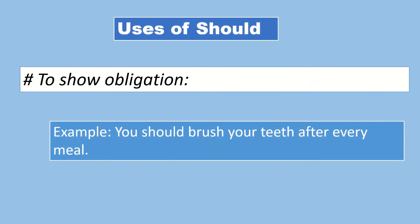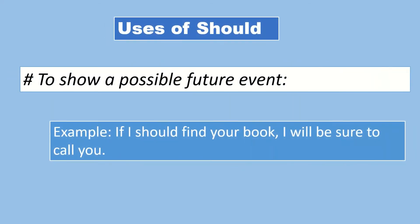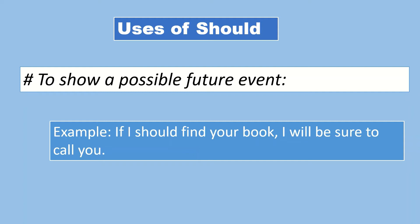'Should' is also used to show obligation. For example: 'You should brush your teeth after every meal.' When obligations are present, you use 'should.' 'Should' is also used to show a possible future event. For example: 'If I should find your book, I will be sure to call you.' The condition is that if I find the book, then I will call you.